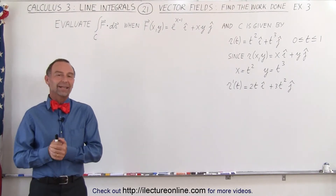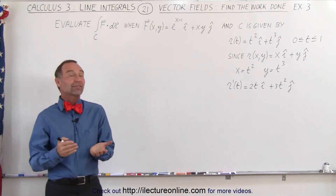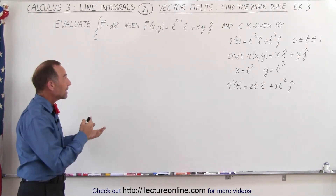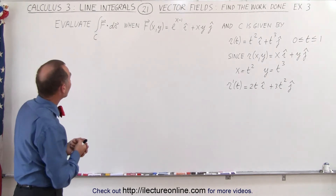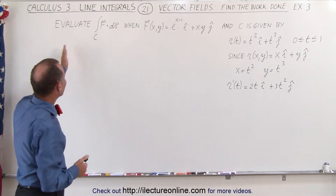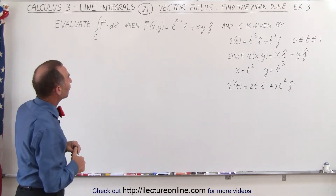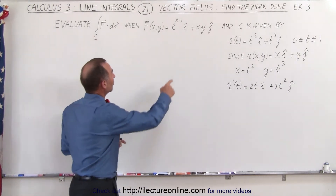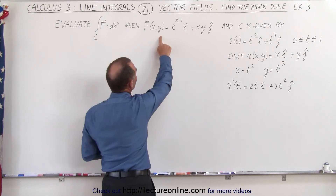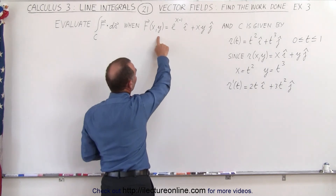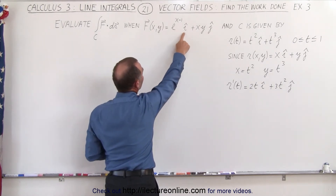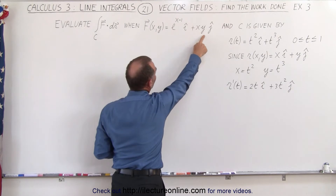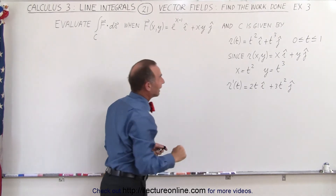Welcome to our lecture online — our third example of how to do a line integral with a vector field. In this case, our vector field is defined in terms of x and y as e to the x minus y in the i direction, plus x times y in the j direction.